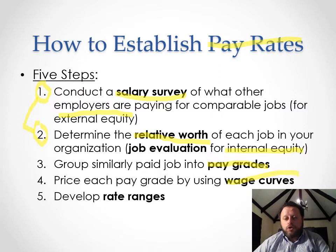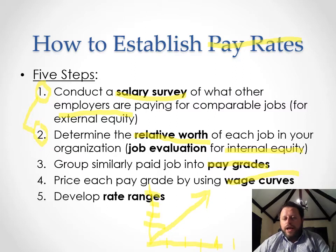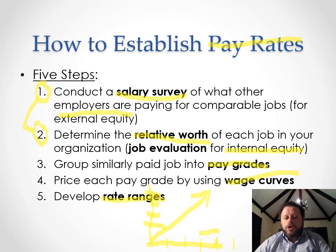Once we have the pay grade, we use it to create a wage curve — really more like a straight line on an X-Y axis. Based on the level of points someone received, you can see which pay grade they fall into: grade one, two, three, four — each with more money. Finally, we create a rate range, which establishes that it's not an exact number but a range.